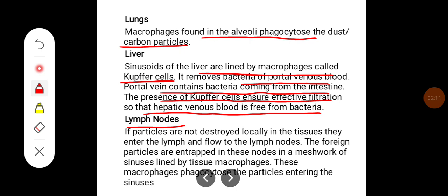In lymph nodes, if the particles are not destroyed locally in the tissues, they enter the lymph and flow to the lymph nodes. The foreign particles are entrapped in these nodes in a meshwork of sinuses lined by tissue macrophages. These macrophages phagocytose the particles entering the sinuses.